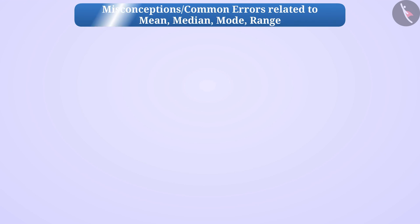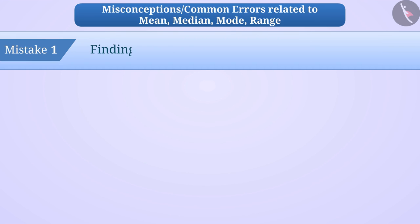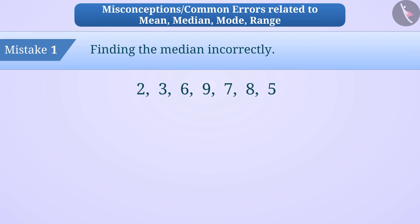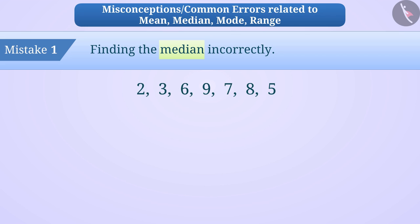Now let's discuss some mistakes. Mistake 1: Finding the median incorrectly. To find the median among these, some children find the median without arranging the data in order. Like here, they think that 9 is the median. But this is a misunderstanding. Only after arranging the data in some order can we find the median.